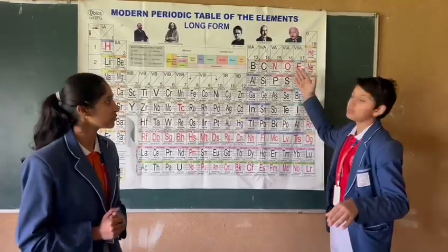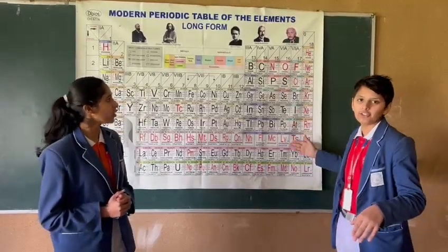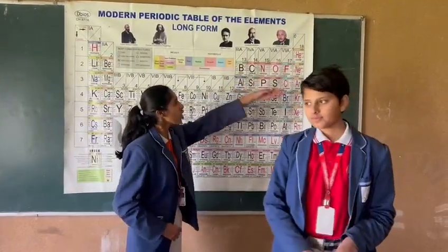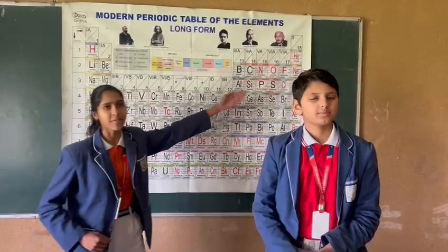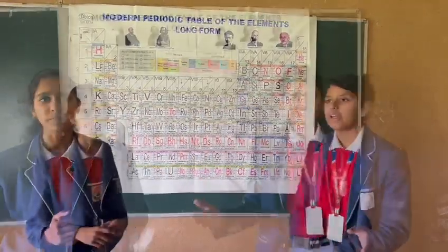The sixteenth group trick is: Osumin, Sundar, Terry, Potter. The sixteenth group is: Oxygen, Sulphur, Selenium, Tellurium, Polonium, Livermorium.